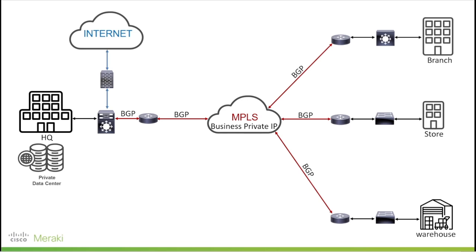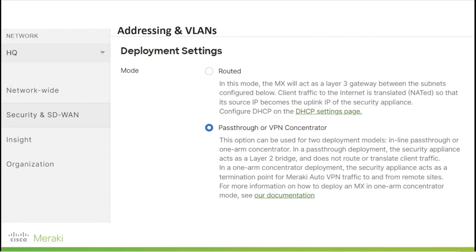First, at the HQ site, we add the Meraki MX as a VPN concentrator with one ARM connection to a Layer 3 core switch using a single interface to carry LAN and WAN traffic. We can have a new subnet configured as a point-to-point /30 and it should be advertised in BGP routes. Here you can see the Meraki dashboard — we can navigate to the Addressing and VLANs tab, then select the mode of the MX to be configured as VPN concentrator mode.